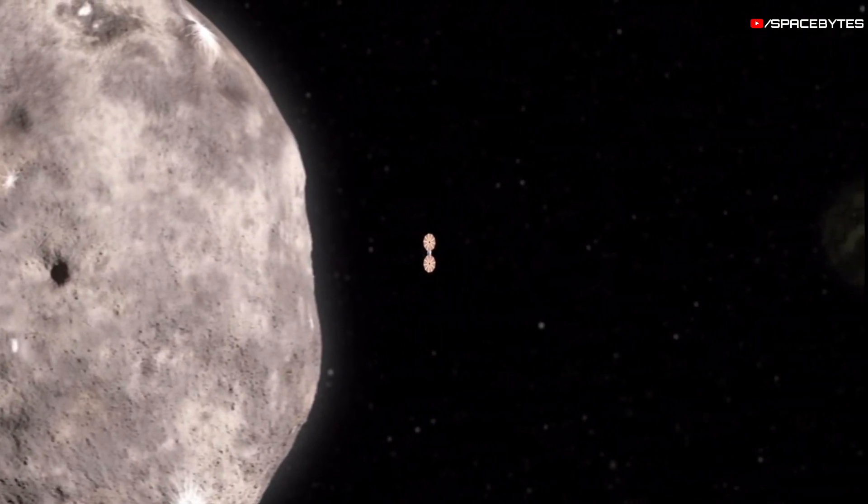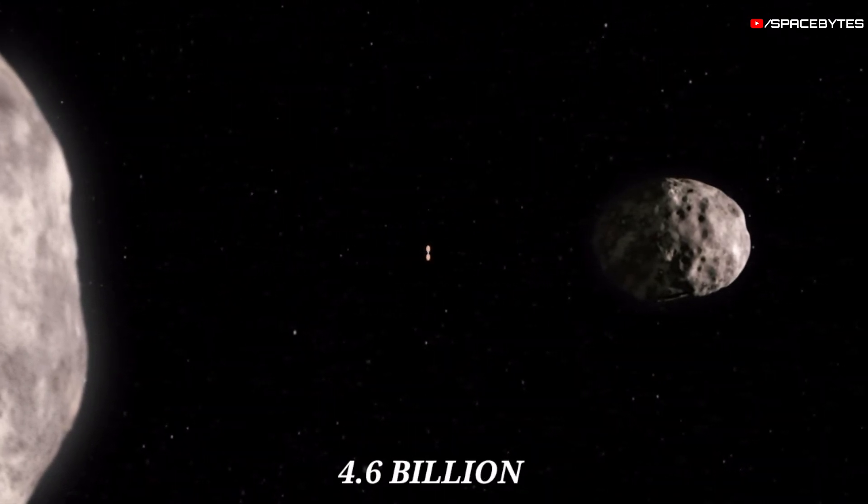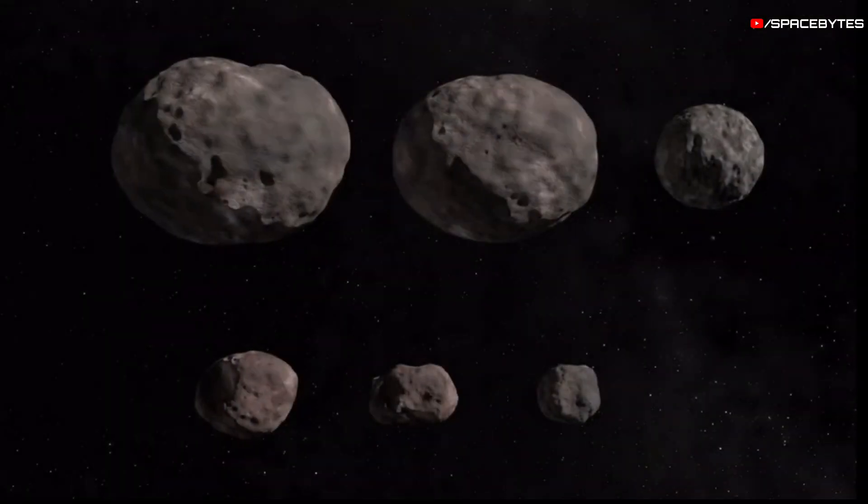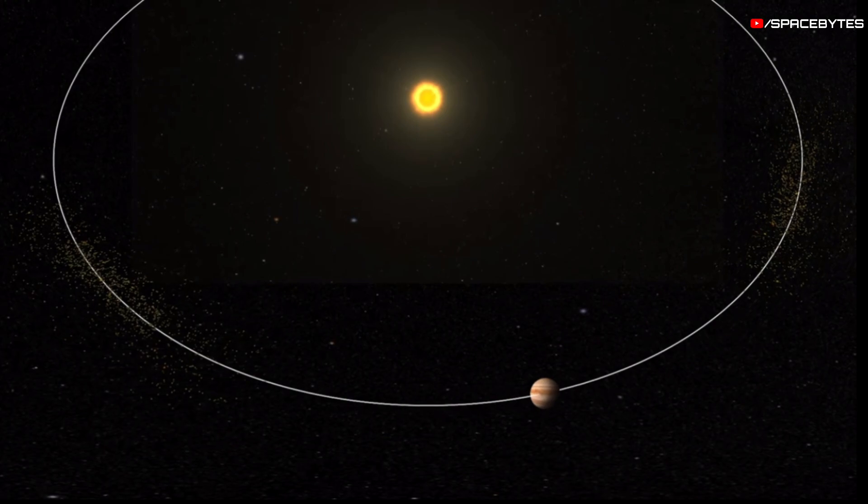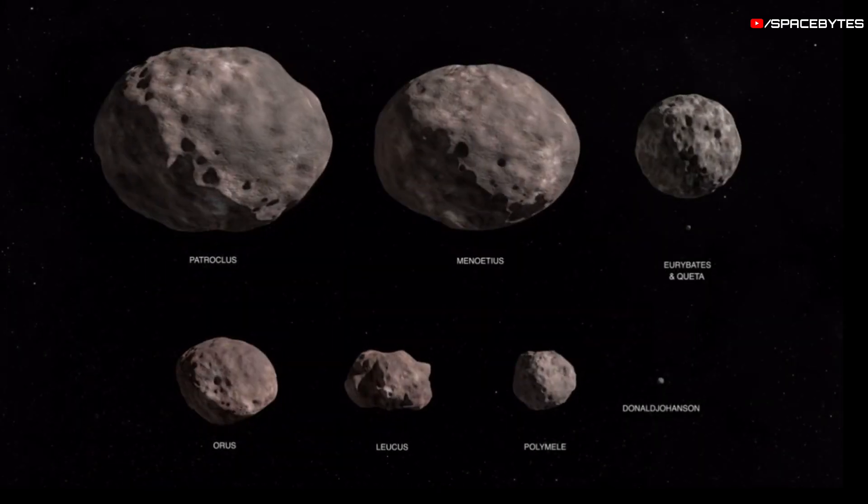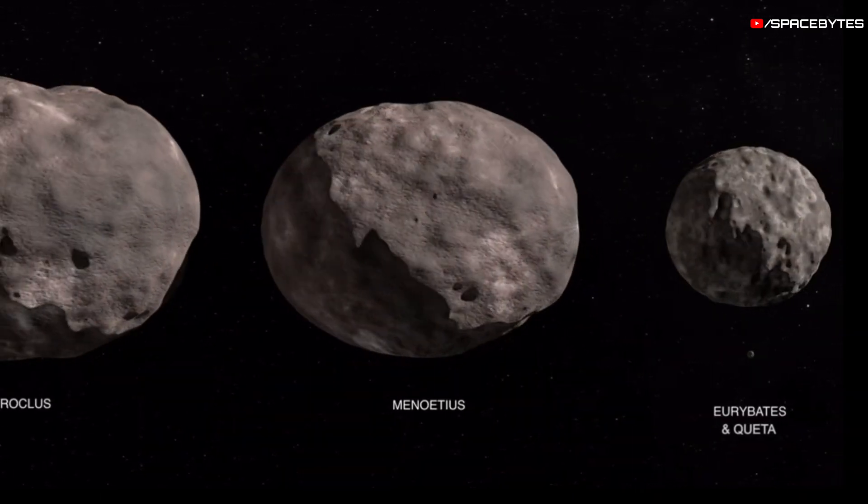Asteroids and comets are leftovers from the formation of the solar system about 4.6 billion years ago. A subset of these objects, the Trojan asteroids, co-orbit the Sun with Jupiter and are in gravitationally stable points called Lagrange points. It has been estimated that there are as many Trojans as there are asteroids in the asteroid belt.